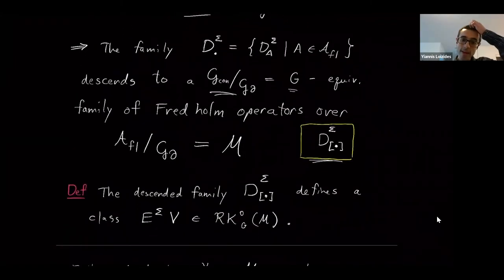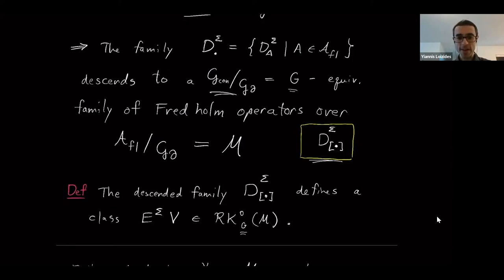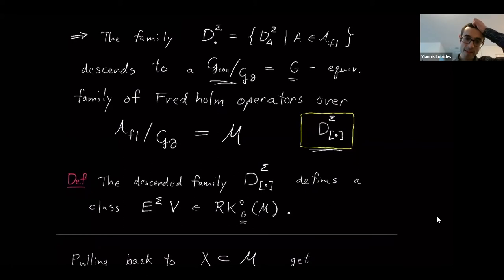This is what I'm going to mean by the Atiyah-Bott class. It's only G-equivariant — just the G. This is not exactly what Atiyah and Bott originally did, but it's very close to it, so I'll just refer to this as the Atiyah-Bott class.